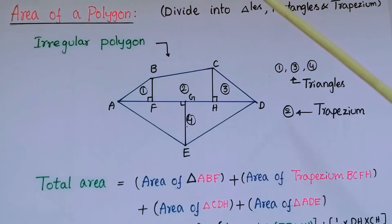Hello everyone, today I am going to tell how to find area of any polygon which has sides more than four. So here I have taken an irregular polygon. Irregular polygon means which has sides that are not equal.